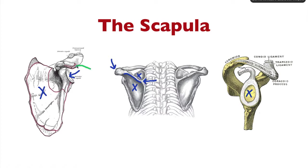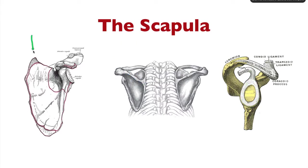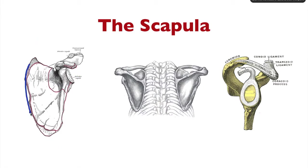Then we have the coracoid process. We have the glenoid labrum with the glenoid ligaments. We have the infraglenoid tubercle and up here we have the supraglenoid tubercle. Lastly, we have the superior angle, the inferior angle, the lateral or glenoid angle, along with the medial border, lateral border, and superior border.